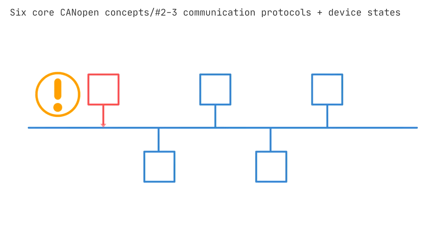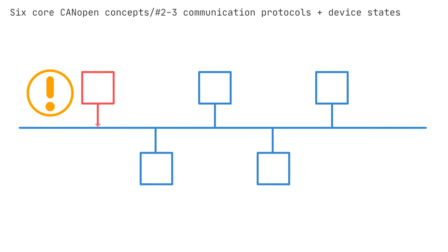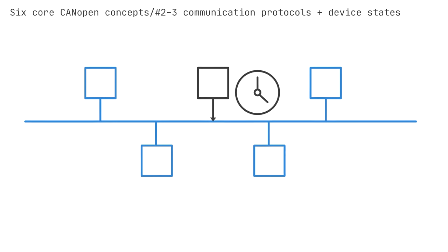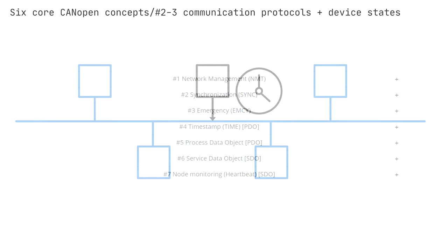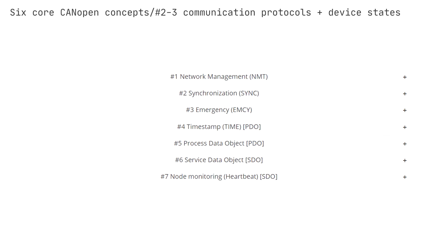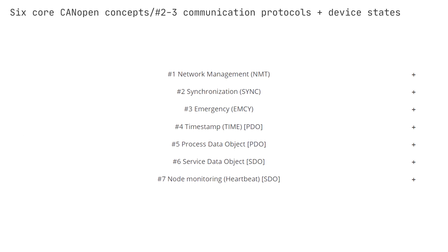Number 3: Emergency (EMC) — the emergency service is used when a device experiences a fatal error, e.g. a sensor failure, allowing it to indicate this to the rest of the network. Number 4: Timestamp (Time PDO) — with this service, a global network time can be distributed, containing a 6-byte date and time information. Number 5: Process Data Object (PDO) — the PDO service is used to transmit real-time data between devices, e.g. measured data such as position, or command data such as torque requests. Number 6: Service Data Object (SDO) — the SDO services are used to access or change values in the object dictionary of a CANopen device, for example when an application master needs to change certain configurations.